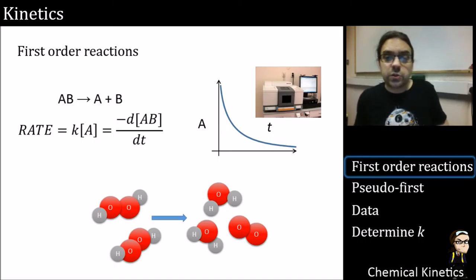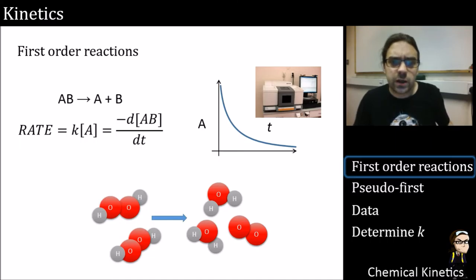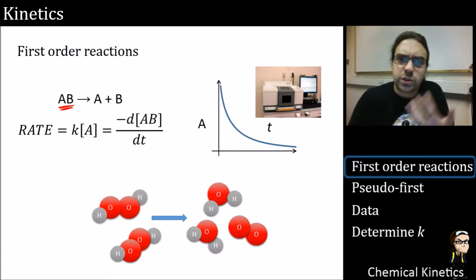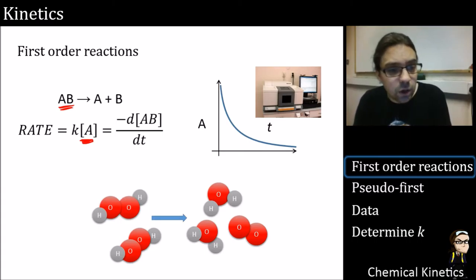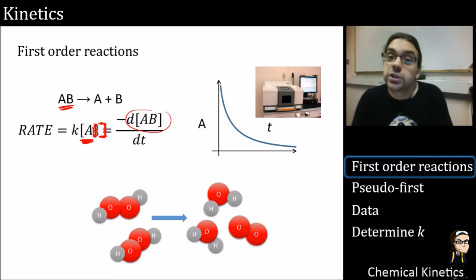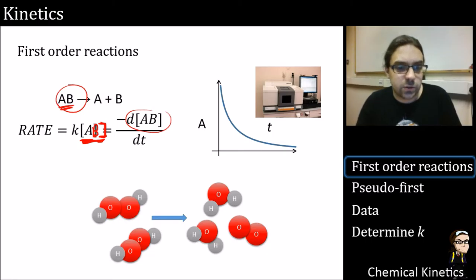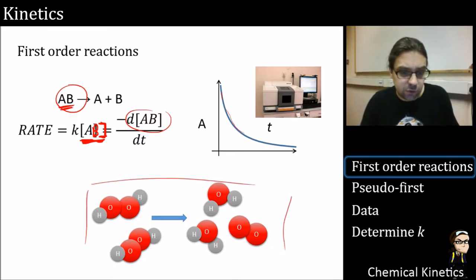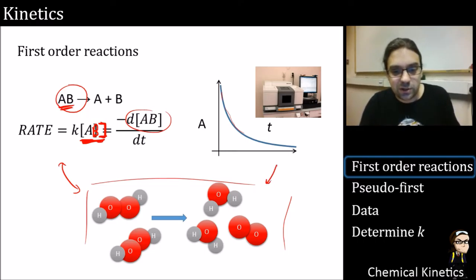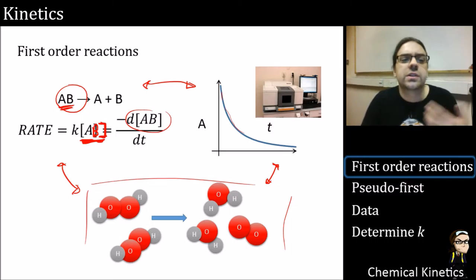A first order reaction — a basic dissociation — pretty much follows first order kinetics. This is where our rate is dependent on only one variable: the concentration of the starting material. The rate of the starting material disappearing equals k times its concentration, giving us a nice exponential decay curve that we could measure spectroscopically. An example is hydrogen peroxide molecules breaking down to water and oxygen.